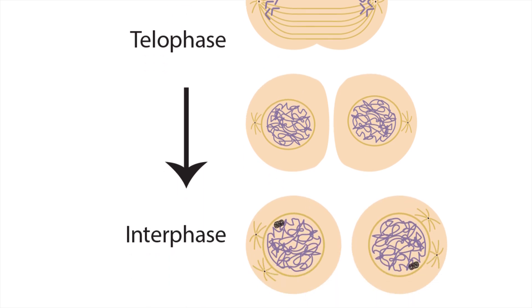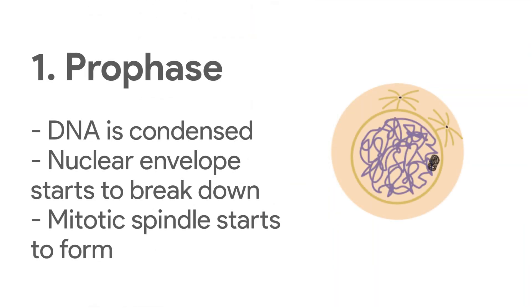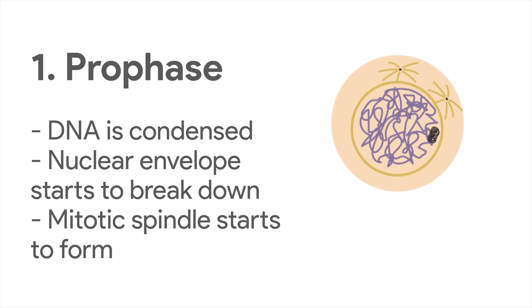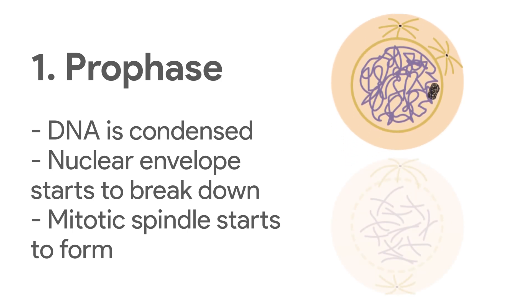Prophase starts right after interphase. In this stage the DNA gets coiled up and condensed. The nuclear envelope that usually contains everything also starts to break down. This makes it easier to see DNA with a microscope. Note how the chromosomes are linked as sister chromatids, joined at a center point called a centromere. We can also see the beginning of the mitotic spindle as the centromeres begin to move.